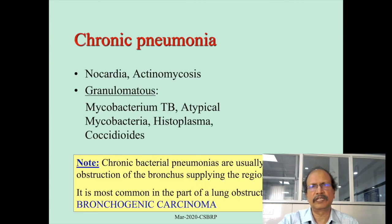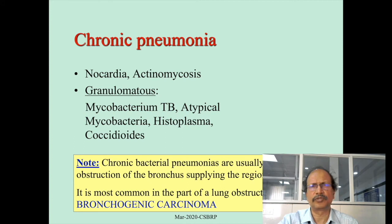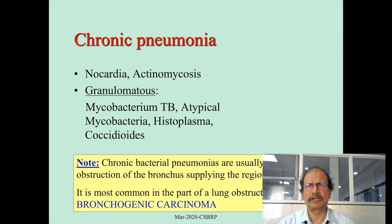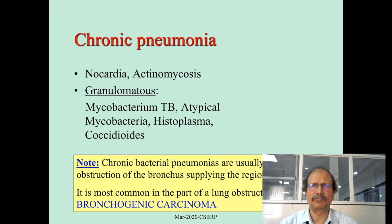Chronic pneumonias are caused by bacteria like Mycobacterium tuberculosis, atypical mycobacteria, or fungi like Coccidioides, or Nocardia and Actinomycosis. Importantly, when encountering an older patient suffering from recurrent or chronic pneumonias, think of the possibility of obstructive pathology — especially bronchogenic carcinoma — which may be obstructing somewhere in the lung fields and causing the chronic variety of pneumonia.